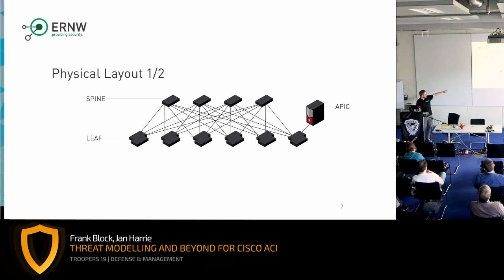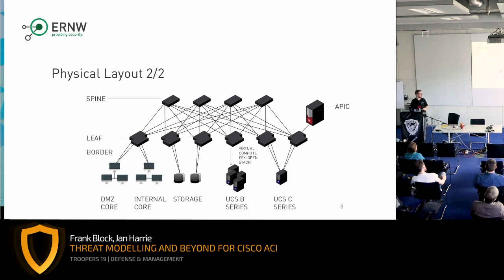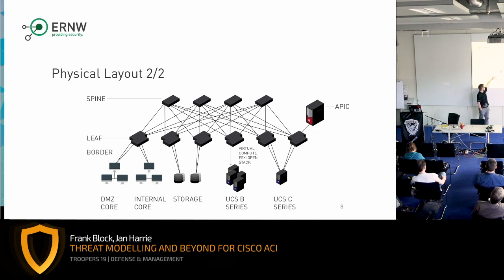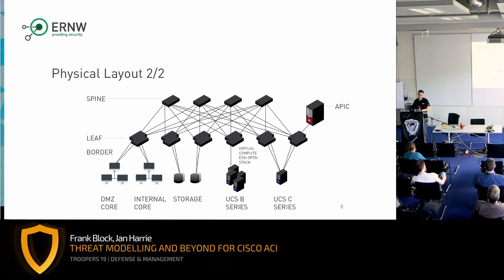On the other side we have the APIC — the Application Policy Infrastructure Controller — which is connected to the leaf. In reality you might have leaf switches below which connect the DMZ, internal core, storage area, or even virtualization. With Cisco ACI we have the opportunity to connect virtual appliances, hypervisor stacks, OpenStack, and so on to this technology.